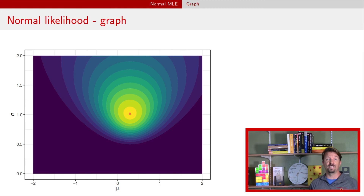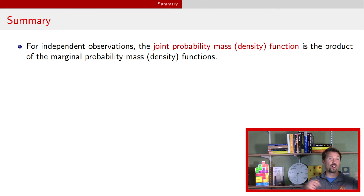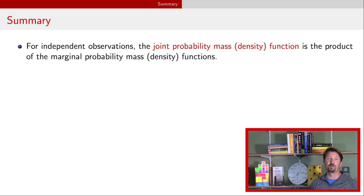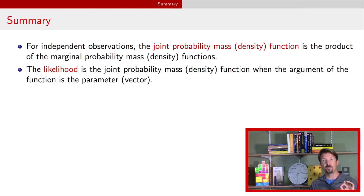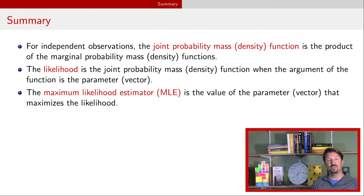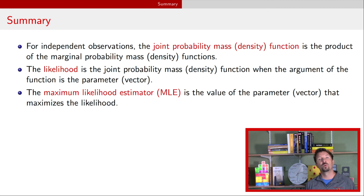So that was a couple of examples of MLEs — one for binomial and one for normal. As an overall summary of these three videos: we introduced the idea of a joint probability mass and density function, and when we have independent random variables, we have the product of the marginal probability density or mass functions. We introduced the idea of a likelihood, and in this video we introduced the MLE — the maximum likelihood estimator — as the value that maximizes that likelihood. In our next set of videos, we will continue talking about statistical inference, in particular a Bayesian approach to parameter estimation.